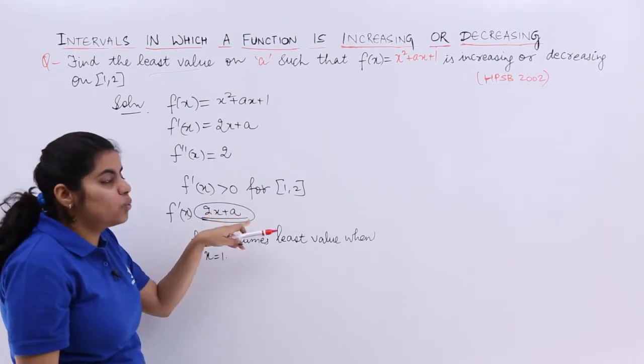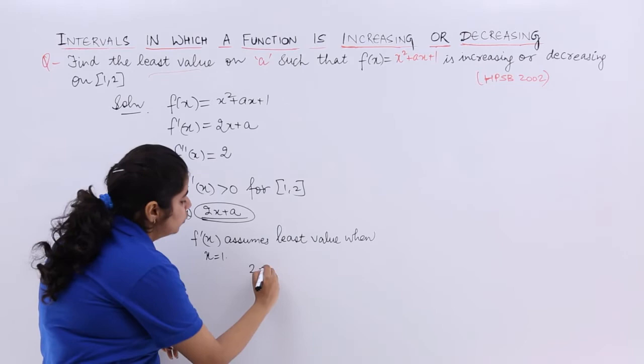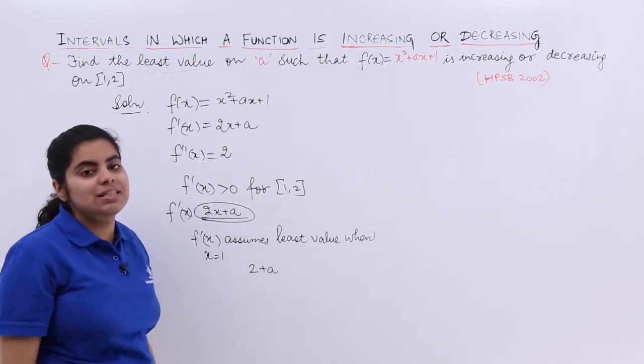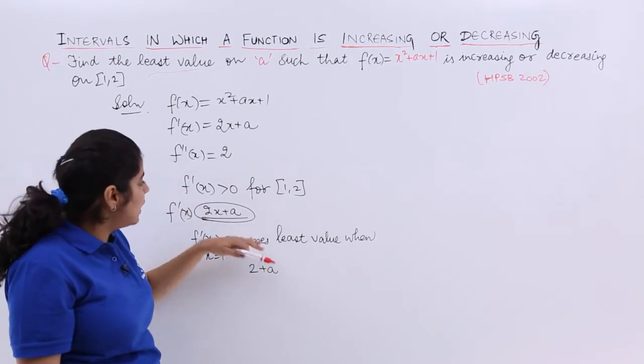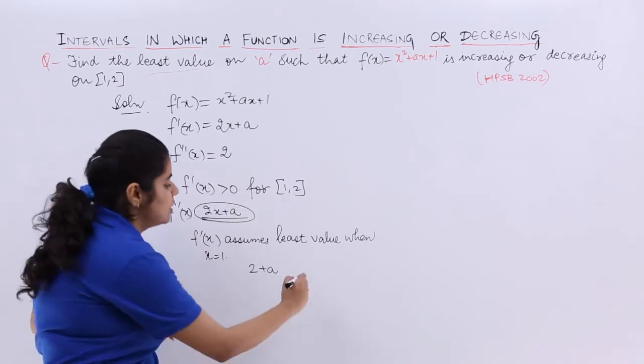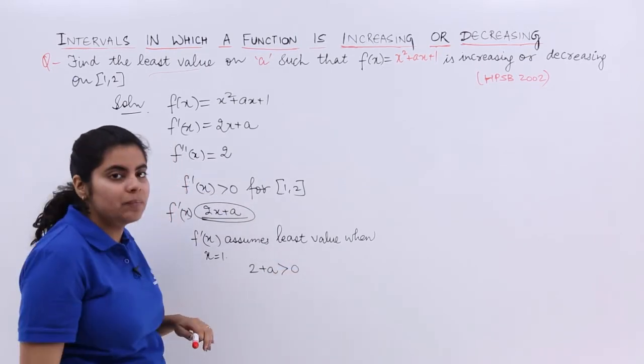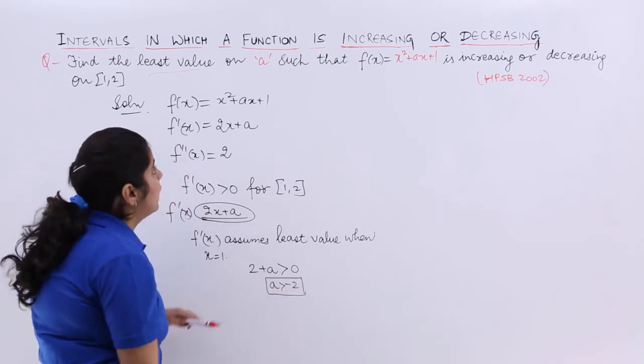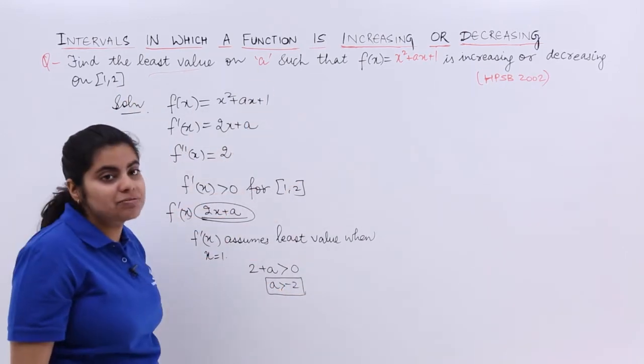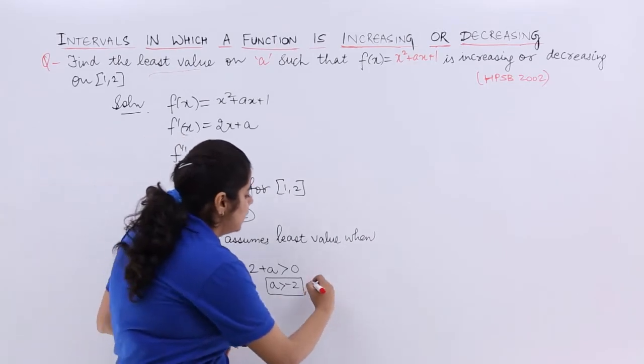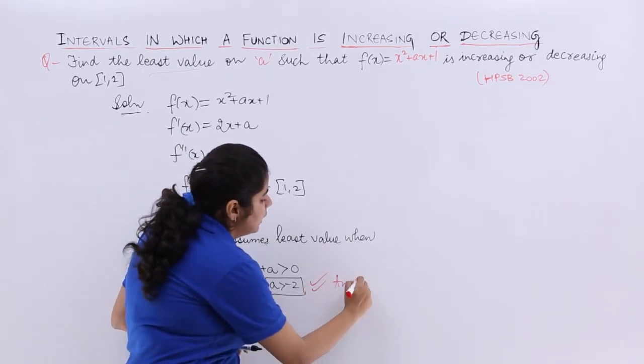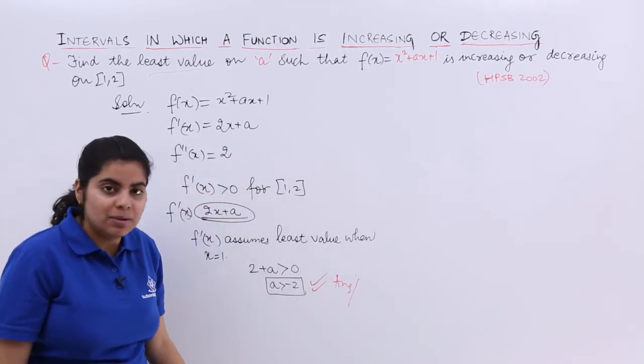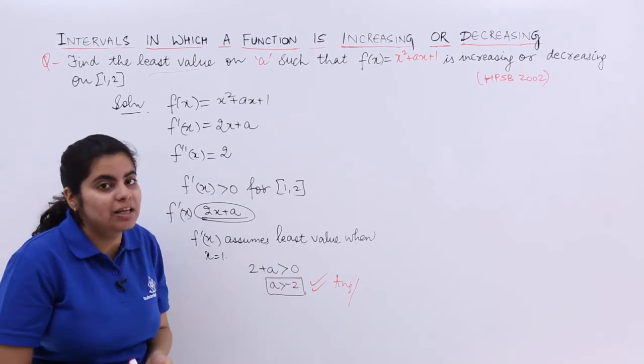So 2(1) + a, that is 2 + a, is going to be the least value. It says that f'(x) is greater than 0, so 2 + a > 0. That means the value of a is greater than -2. The question asks to find the least value of a, so a must be greater than -2.